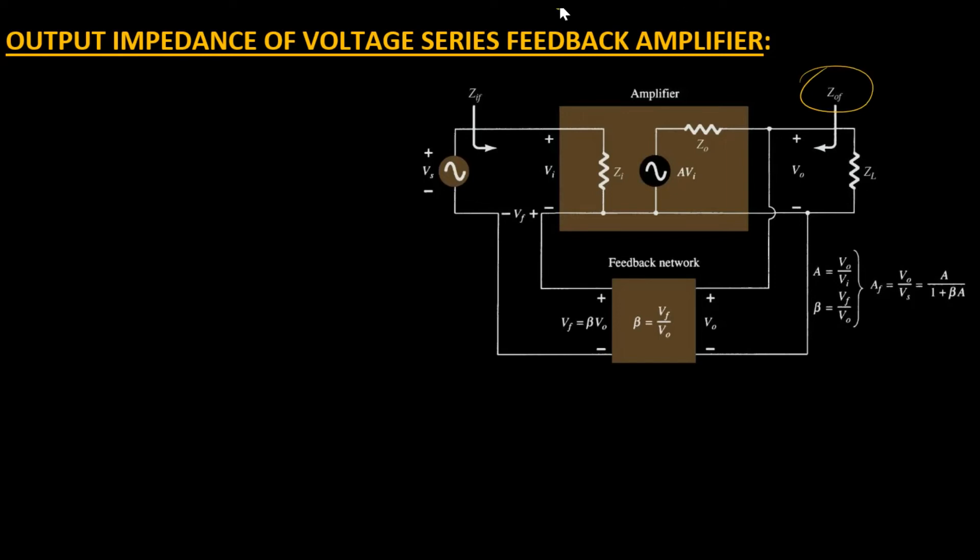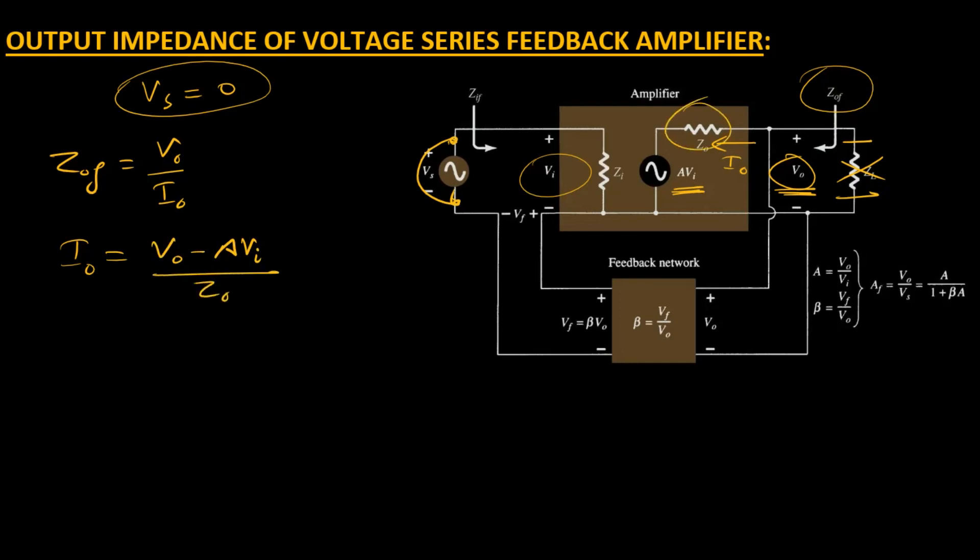In a similar way we can work out the output impedance Zof. Before moving to calculation, we make a few assumptions: we reduce Vs to equal zero, meaning we short circuit these terminals, and ZL acts as open circuit. We assume a voltage source at the output contributing all currents in the network. Mathematically, Zof equals V0 over I0, where V0 is the output potential and I0 is the current flowing through Z0. I0 equals V0 minus A·Vi divided by Z0.